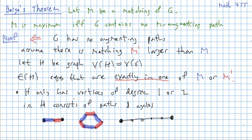Now, since M prime is larger than M, H cannot just consist of even cycles and even paths, because each of those would have the same number of edges of M as in M prime. So that means that there must be an odd path, such that the first and last vertex edge belong to M prime. So something like this, and then it would alternate.